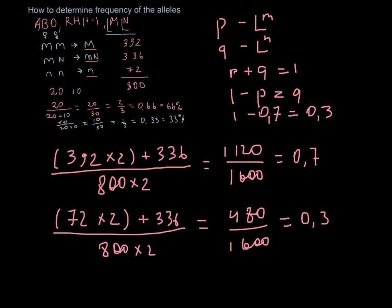So this was an example of how to find frequency of two alleles in the human population, and this same formula